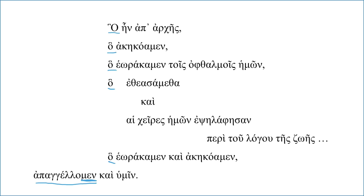So what you have here are a series of five relative clauses: what was from the beginning; what we have heard — remember, that's the perfect of akouo; what we have seen — well, how do we see things? We saw them with our eyes. And then here's another verb for 'see,' and when you get those two like this, probably there's some nuance of difference. Normally people just don't use exact synonyms without any significant change in meaning.